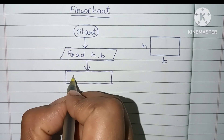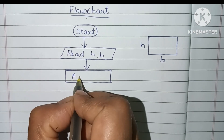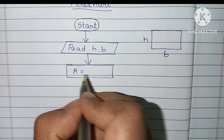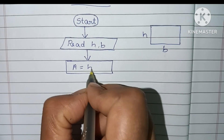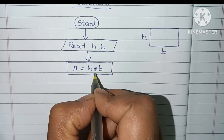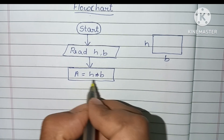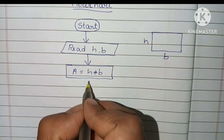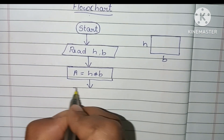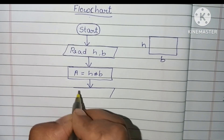Next we have to calculate the area of the rectangle. Calculation is always done within a rectangular shape. Within that we write the formula: A is equal to H into B. This is the formula to find the area of a rectangle.